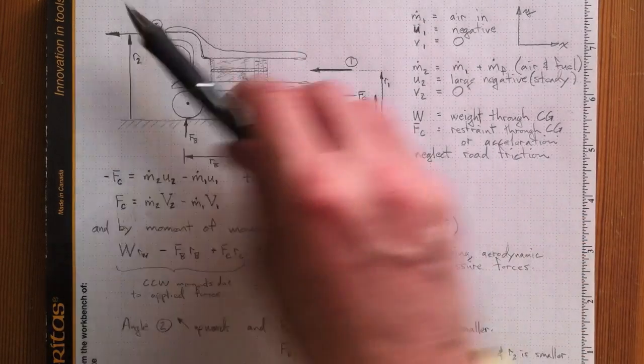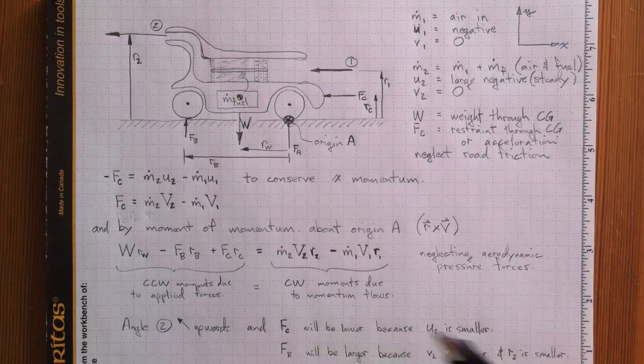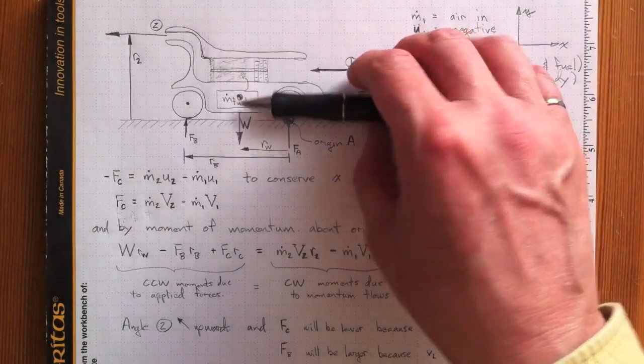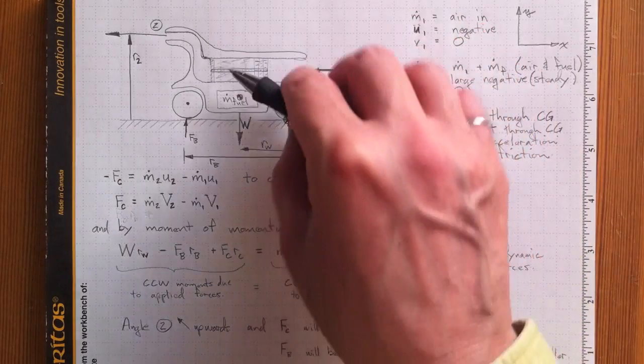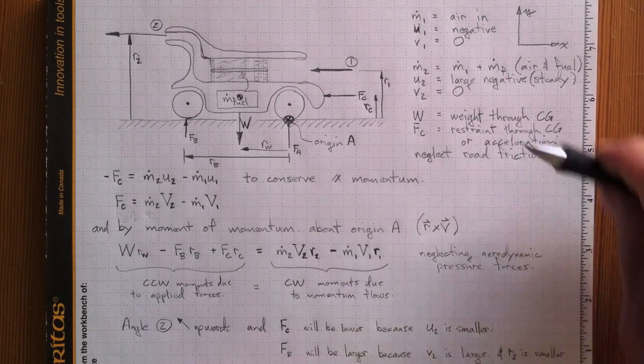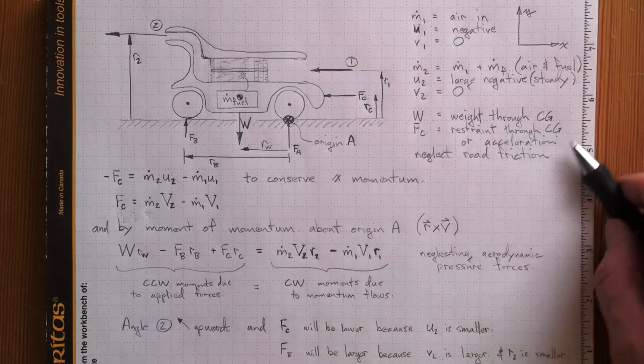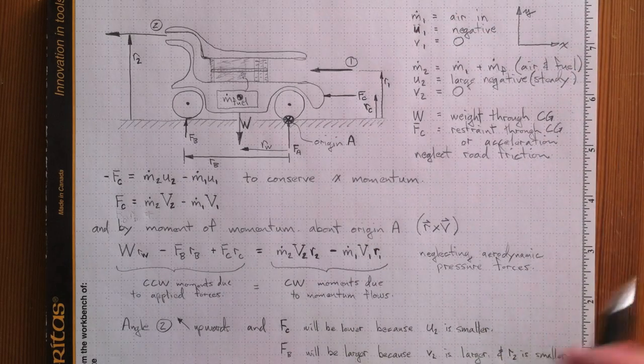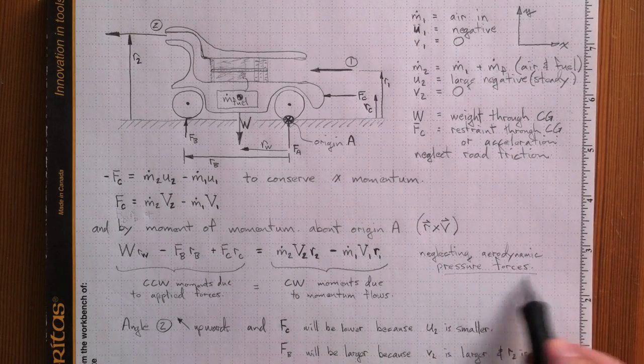V2, also equal to zero. No vertical here, it's all horizontal. The car has a weight of W, and that acts as gravitational force downwards through the center of gravity. Fc is the restraint through the center of gravity, or it could be an acceleration. We're going to neglect road friction. We're also neglecting aerodynamic pressure forces.